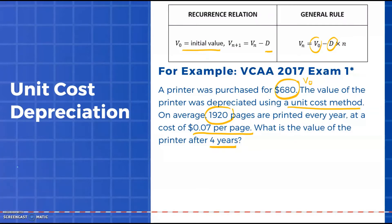First I want to put my rule together. In general, the value of my printer is going to be the initial value, 680, minus my depreciation amount 0.07 times the number of uses. The next thing I need to work out is what value of n am I going to substitute in. We've got 1,920 pages per year for four years, giving us a total of 7,680 pages printed over that time. When we substitute into our rule, we're finding V₇₆₈₀ = 680 - 0.07 × 7,680, which gives us our value after that four year period of $142.40.